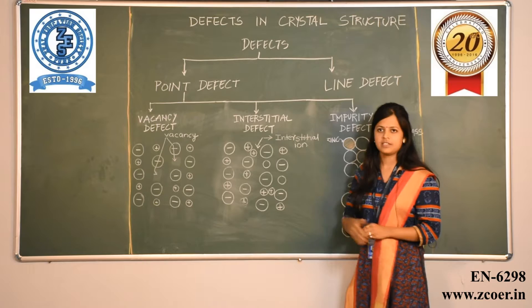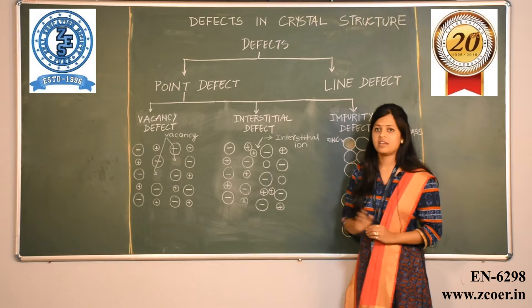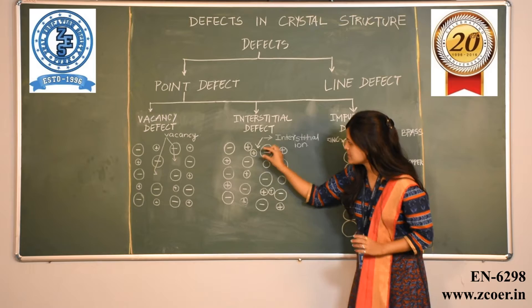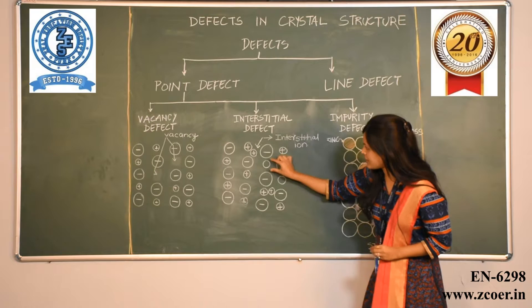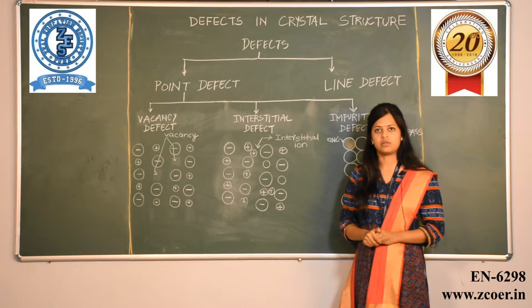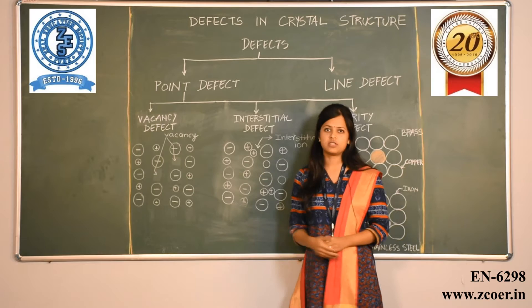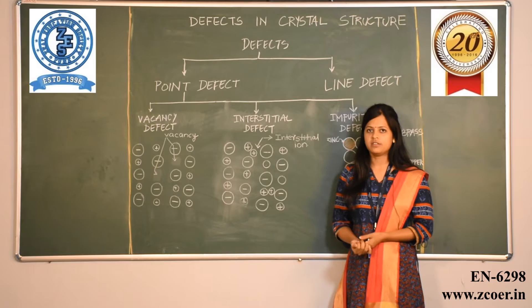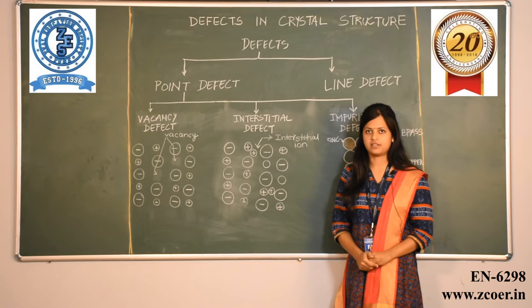The second type is the interstitial defect. In an interstitial defect, the cation or anion is still present in the crystal but it occupies an interstitial position in the crystal lattice. For example, a cation that was originally at one site has moved to an interstitial location between four surrounding particles. In the case of vacancy defects, the density of the crystal is affected, whereas in interstitial defects the density is not affected because the particle is still present in the crystal lattice.